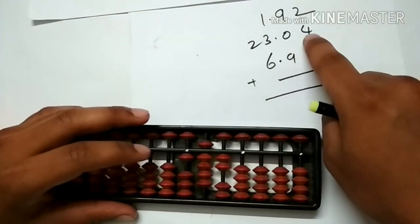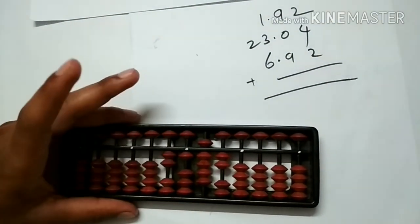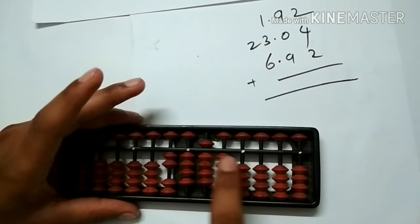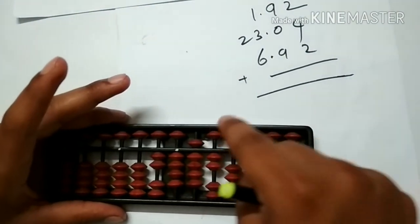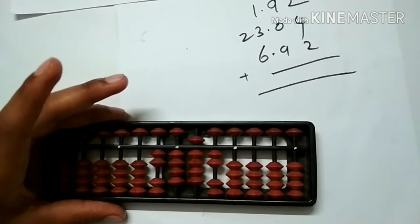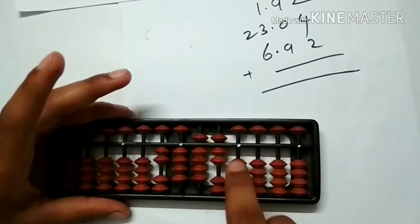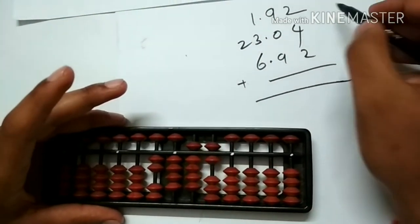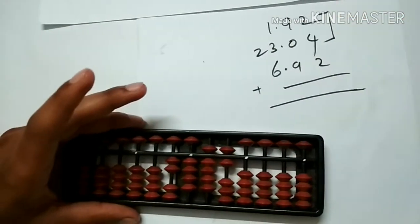To add 23.04: so 20 on the 10th rod, 3 on the units rod, 0 and 4 - here we have to use small friends concept. Add 5 less the 4th friend, that is 1. Now we have finished addition up to 23.04.